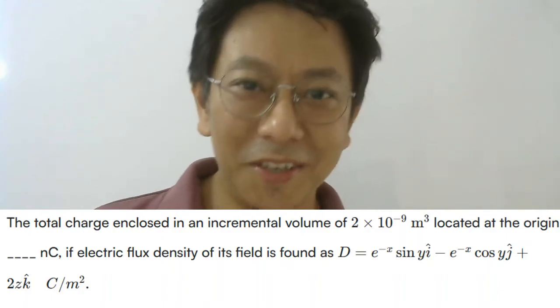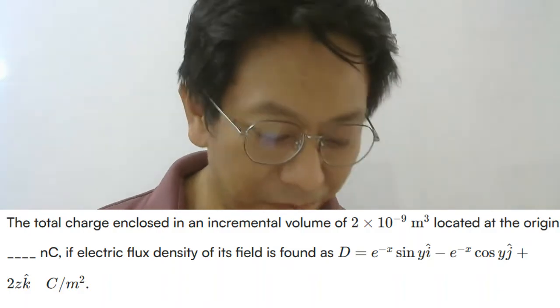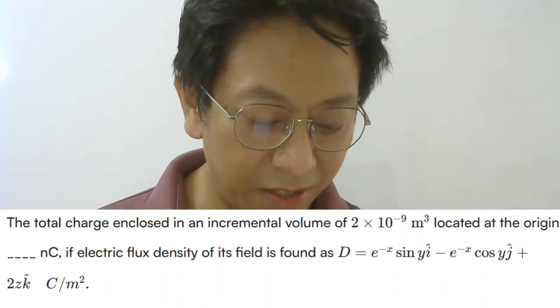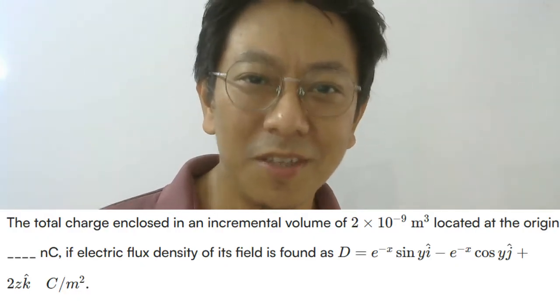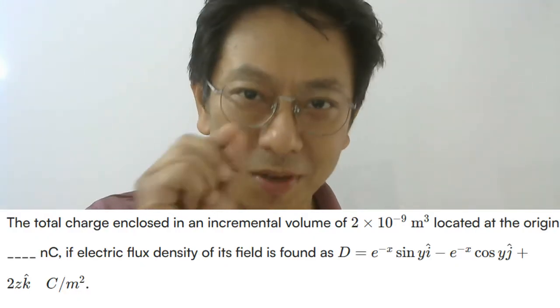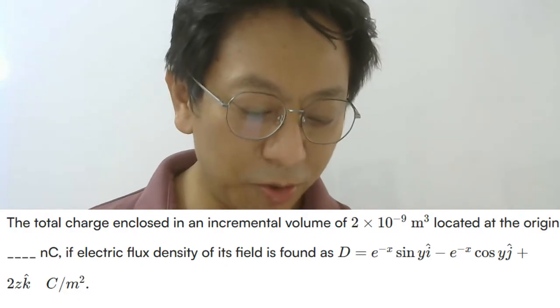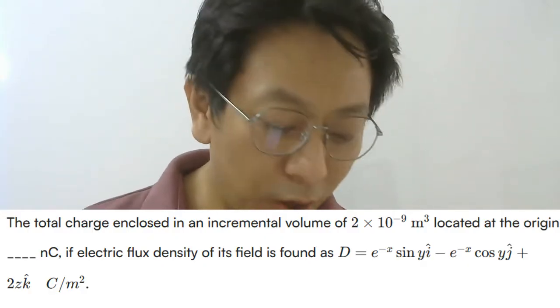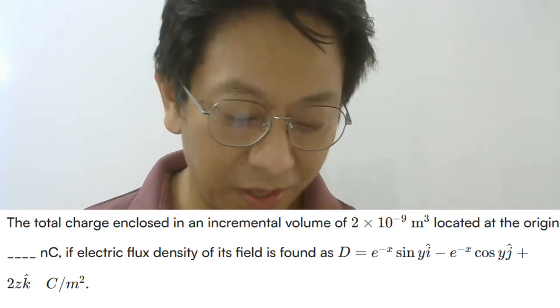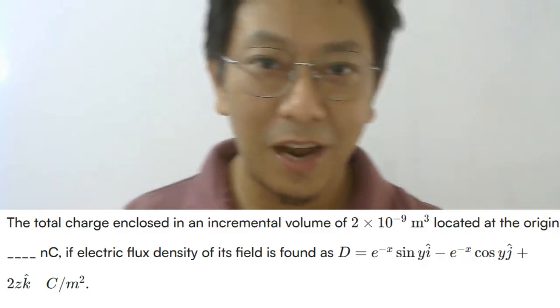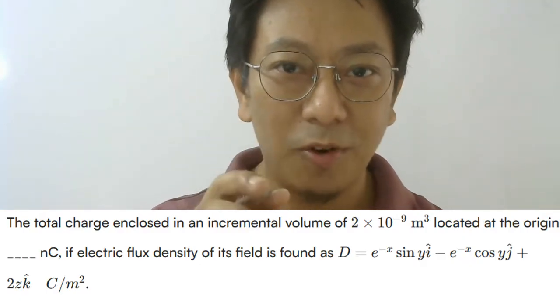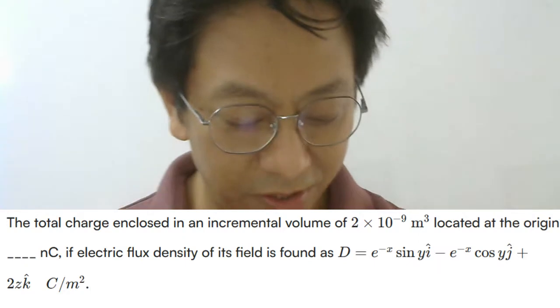Let me first read the question for you. It says: the total charge enclosed in an incremental volume — incremental volume here means small volume dv — of 2×10⁻⁹ meter cube located at the origin is how many nano coulombs? So we have to find the charge enclosed in a small volume located at the origin.